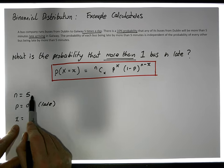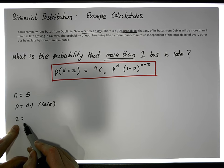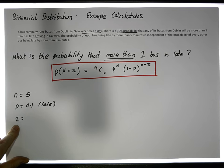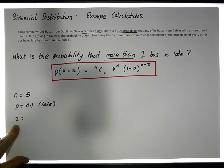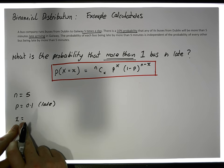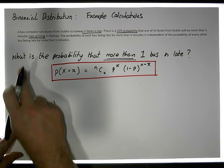And X is a specific value — a specific number out of the total number of objects — how many things does this happen to. For example, if I was interested in exactly three buses being late, X would be 3; exactly four buses late, X is 4; exactly one bus late, X is 1; no buses late, X is 0; all buses late, X is 5.